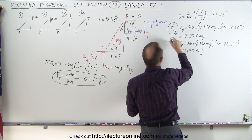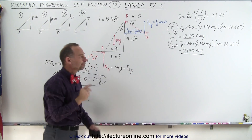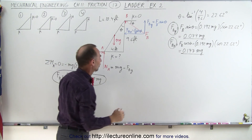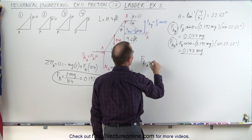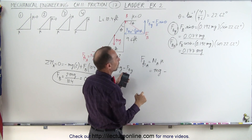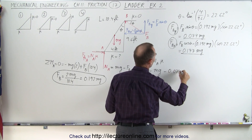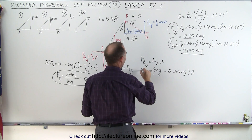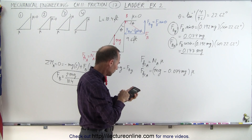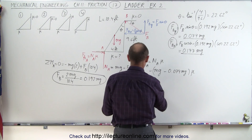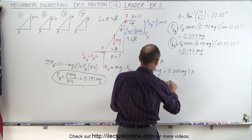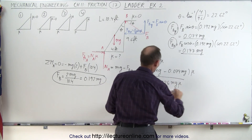Now we have the y and x components of the force acting at B, so we can find the friction force at A. The friction force at A, which equals the normal force at A times mu, is equal to mg minus Fb in the y direction — which is 0.074mg — all multiplied by mu. Working that out: 1 minus 0.074 gives friction force at A equal to 0.926mg·mu.